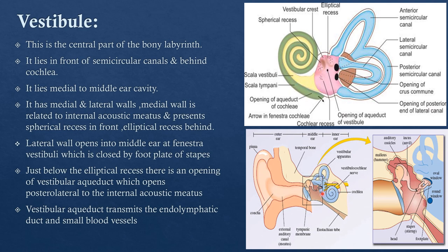The lateral wall of the vestibule has the fenestra vestibuli. On the medial wall there are two recesses: the elliptical recess and the spherical recess. Just beneath the elliptical recess is an opening known as the opening of the aqueduct of the vestibule, which transmits the endolymphatic duct and small blood vessels.